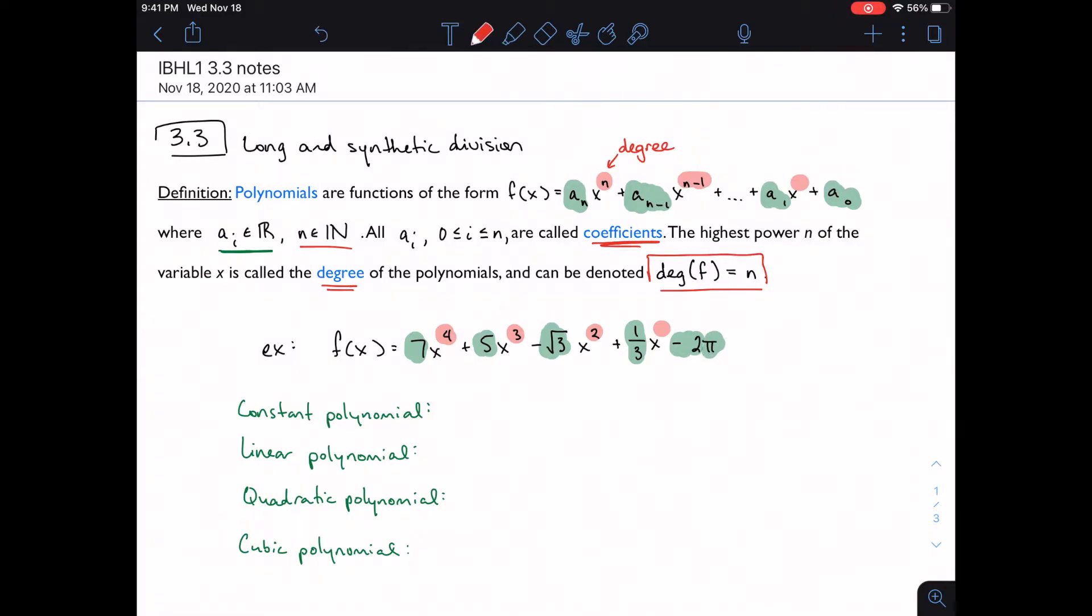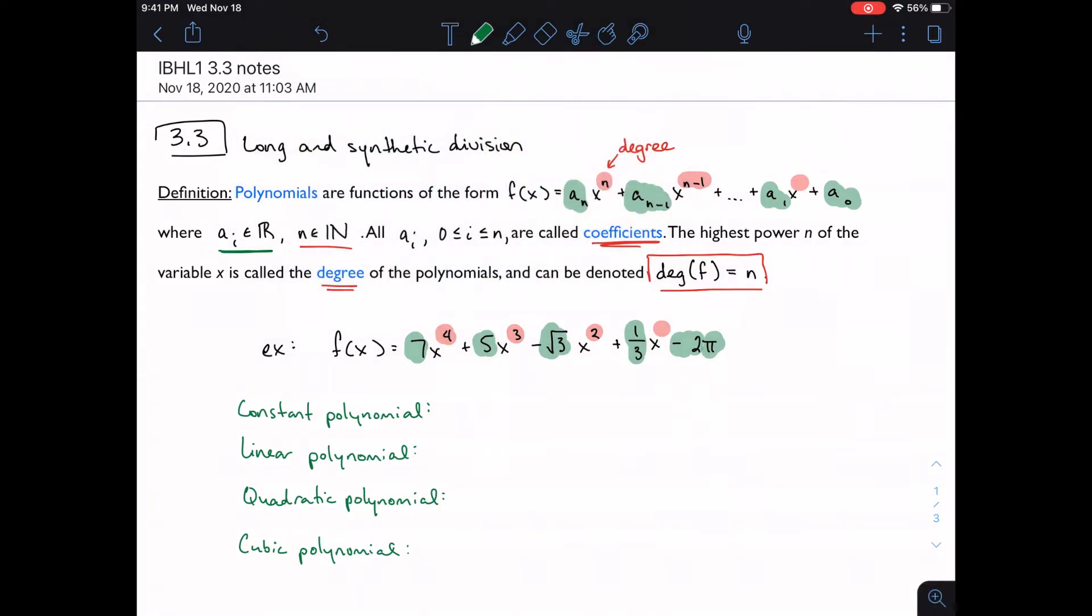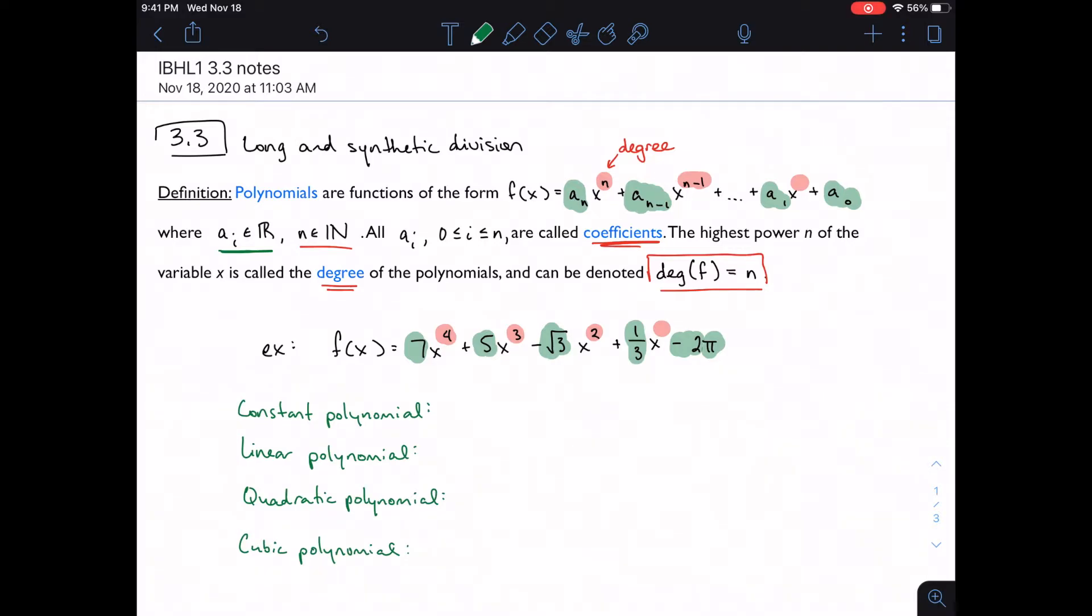And we have some polynomials that we already know. The constant polynomial is just going to be in the function f of x equal to some c. And of course, c has to be a real number, just like we said above. We know what linear polynomials look like. These look like ax plus b. And the catch is that a and b, sorry, a can't be zero. And of course, a and b still have to be real numbers.